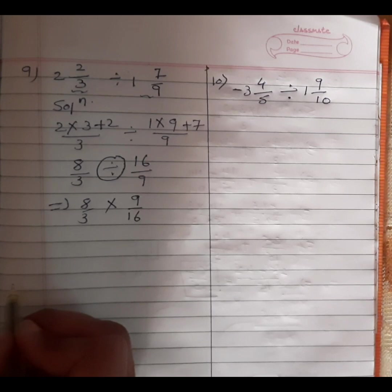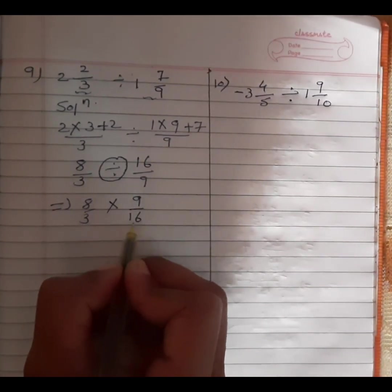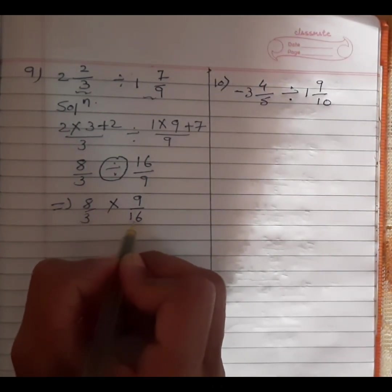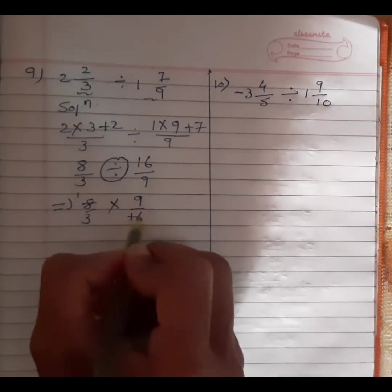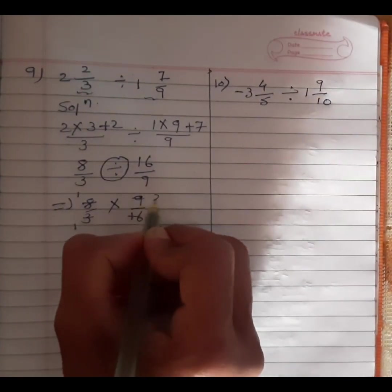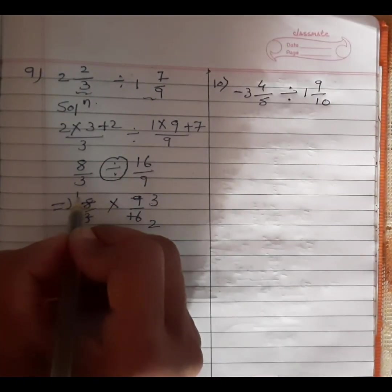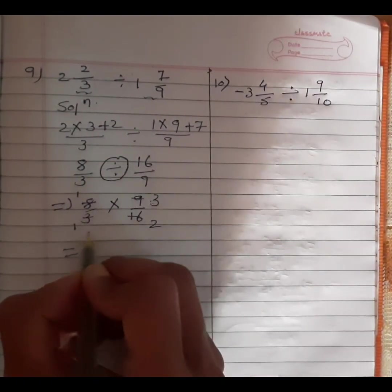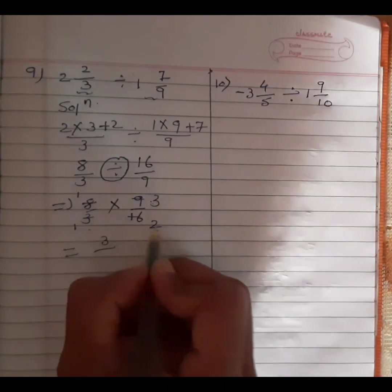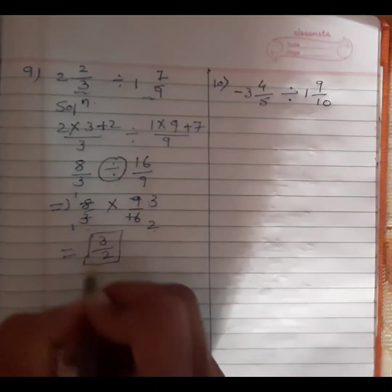Now we have to check whether numerator and denominator we can divide or not. So numerator and denominator: 8 ones are 8, 8 twos are 16 — and 3 ones are 3, 3 threes are 9. We got 3 and 1 here, and 2 and 1 here. Numerator into numerator: 3 ones are 3. Denominator into denominator: 2 ones are 2. So 3 by 2 is our final answer.